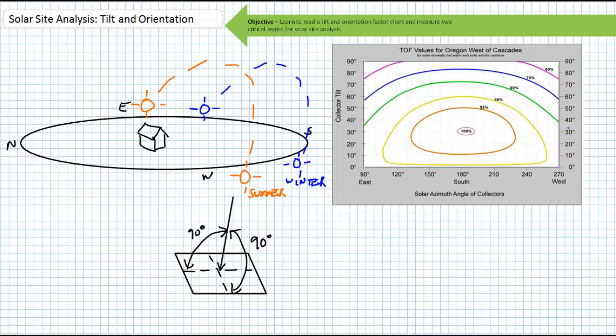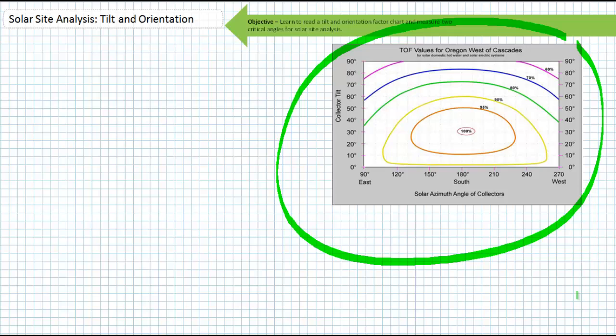Luckily enough, you don't have to chart it because someone else has and has made the data freely available for your use. This is a TOF chart taken straight from the Oregon Department of Energy website. I'll blow it up so we can take a better look at it.